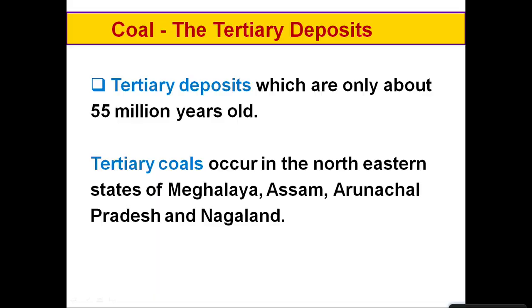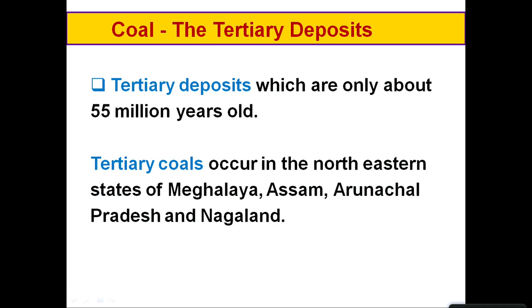The second type is tertiary coal deposits, dating back to around 55 million years ago — more recent than Gondwana but still ancient. These tertiary deposits are found mainly in the states of Assam, Arunachal Pradesh and Nagaland in the northeastern states.